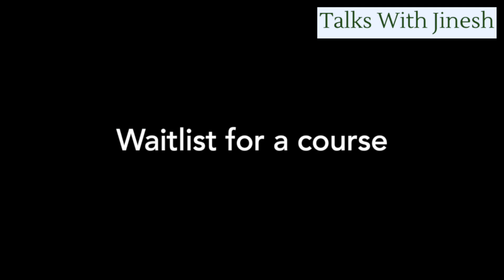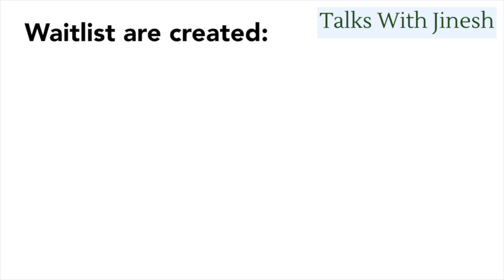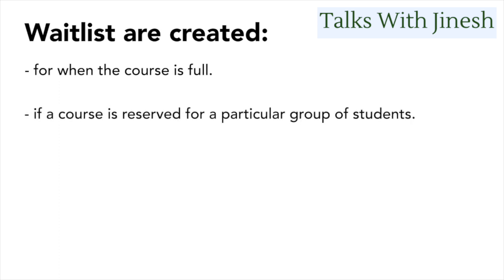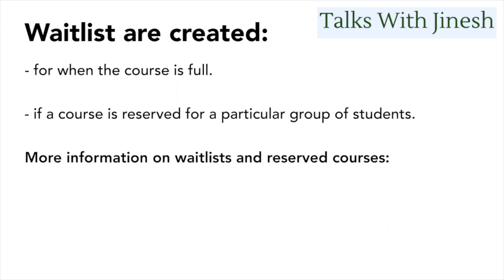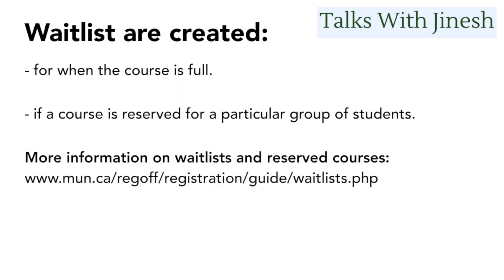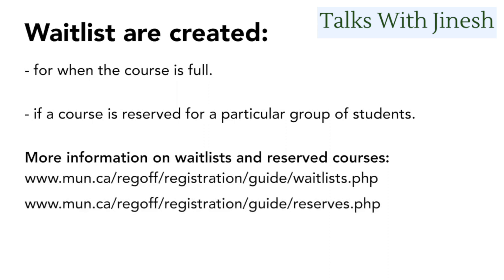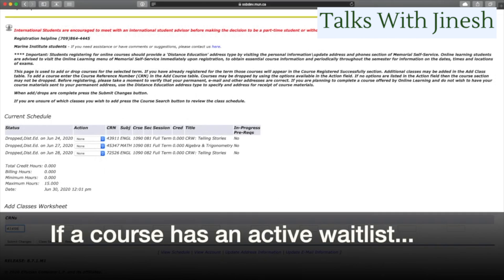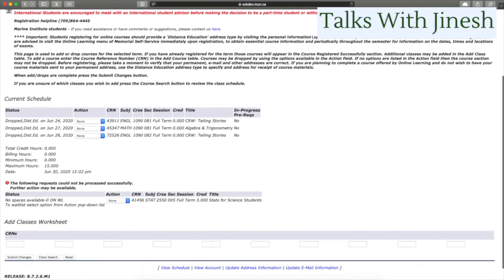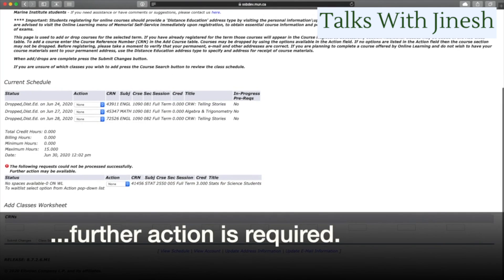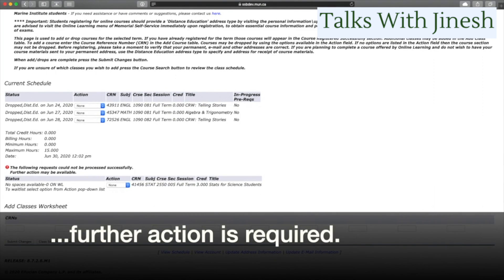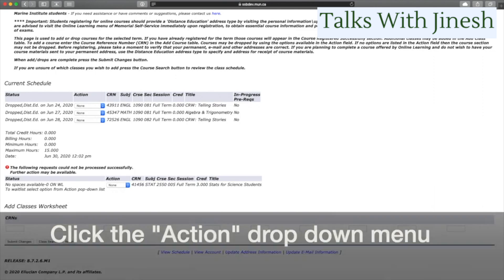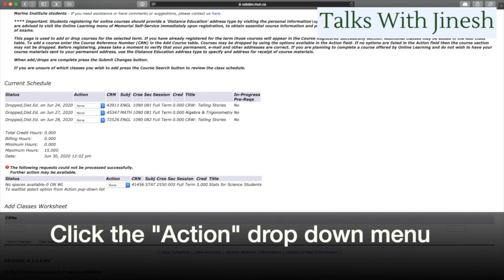Now let's talk about waitlists. Waitlists are created when a course is full, or if a course is reserved for a particular group of students. More information on waitlists and reserved courses can be found in the link in the description below. If a course has an active waitlist, you'll see a specific message. You can register yourself on the waitlist by clicking the Action drop-down menu and selecting that you want to be waitlisted.